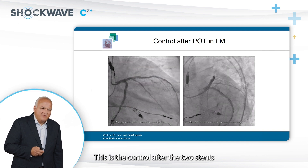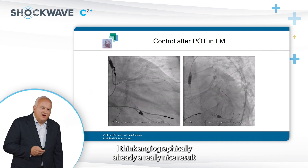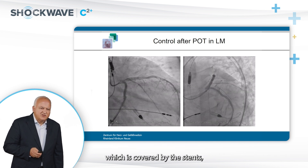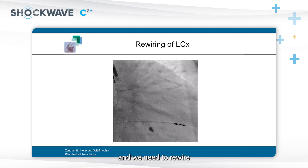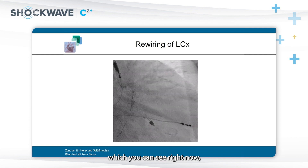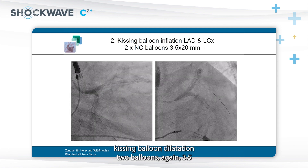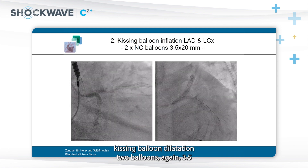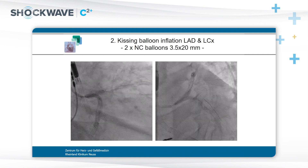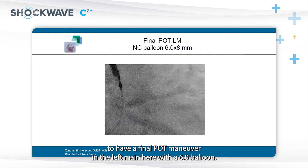This is the control after two stents and the POT maneuver in the left main — angiographically already a very nice result. The intermediate branch is still open despite being covered by the stents. We rewired through the struts into the circumflex artery, which was not difficult to achieve, followed by the second kissing balloon dilatation with two 3.5 mm balloons to open up the struts to the circumflex artery.